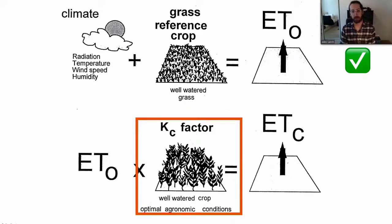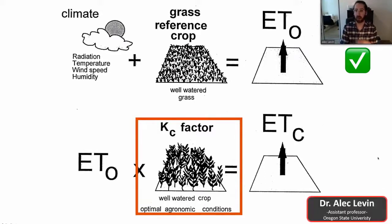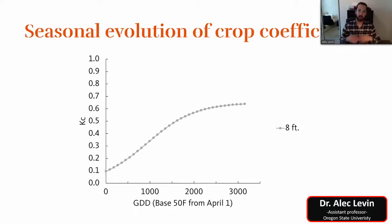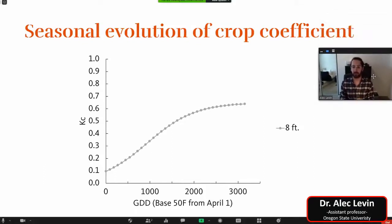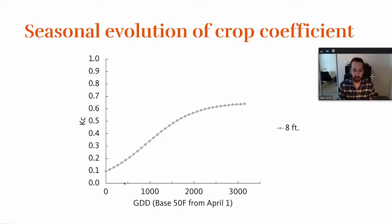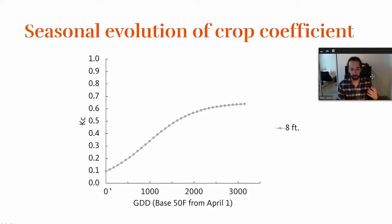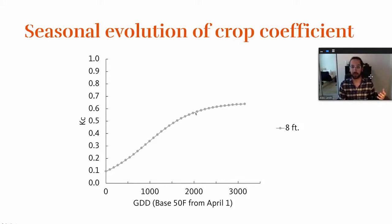So Kc multiplied by ETo gives us ETc. The crop coefficient develops over the course of a season as a function of growing degree days, since plant growth is highly dependent on temperature. When grapevines leaf out at bud break, degree days start to accumulate, the vine grows, shoots fill out the canopy, and at canopy closure it stops expanding. This gives a sigmoidal relationship, which is very common in biology.